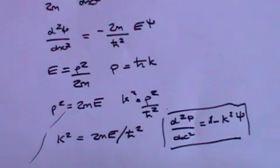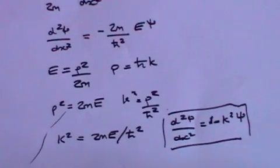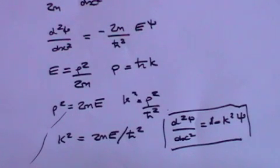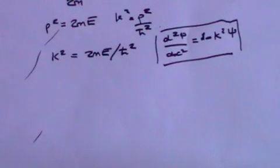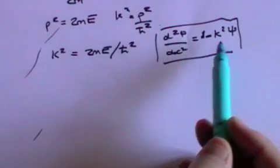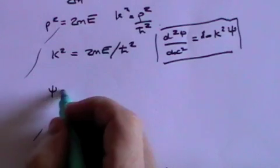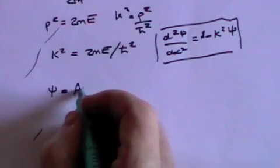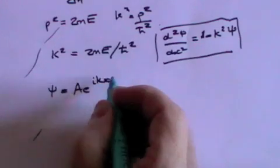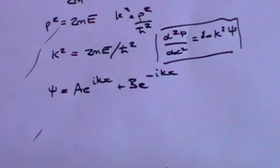That's the wave equation — that should be a minus there. That's the wave equation for the particle moving freely in no potential. What is the solution to that equation? Well, it has to be solved by a complex function because of this minus term here. What you find is that it's solved by ψ equals Ae^(ikx) plus Be^(-ikx).